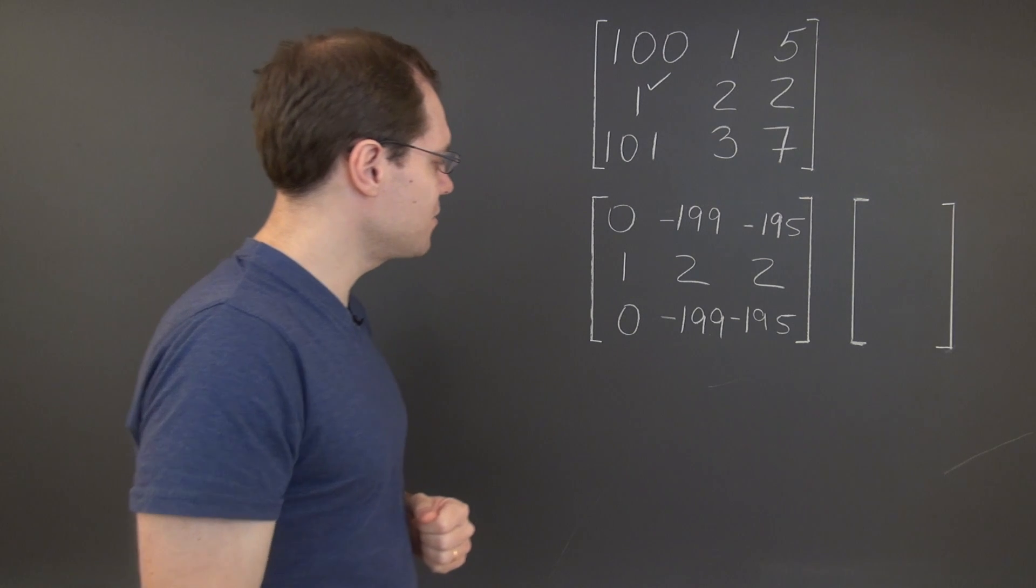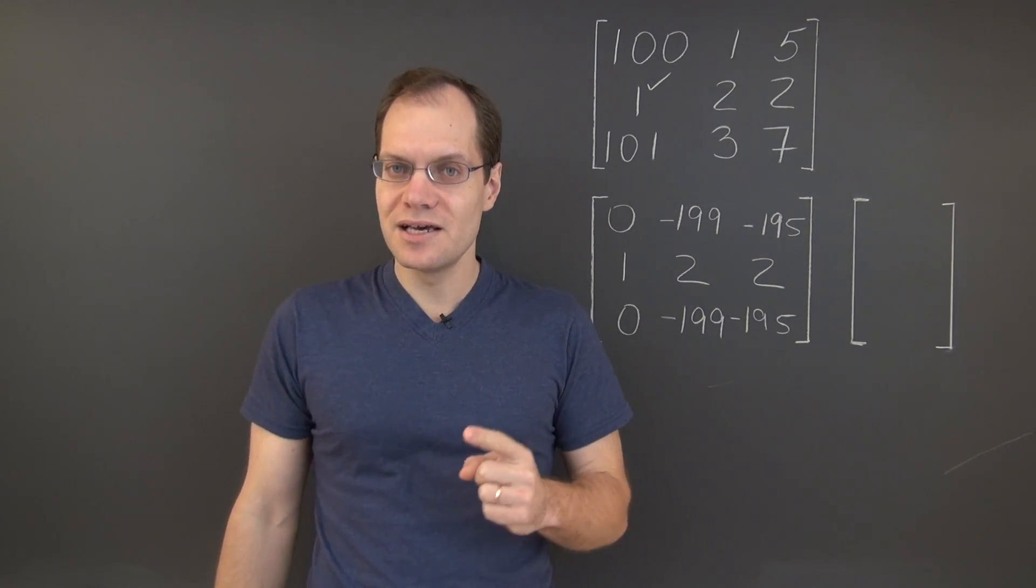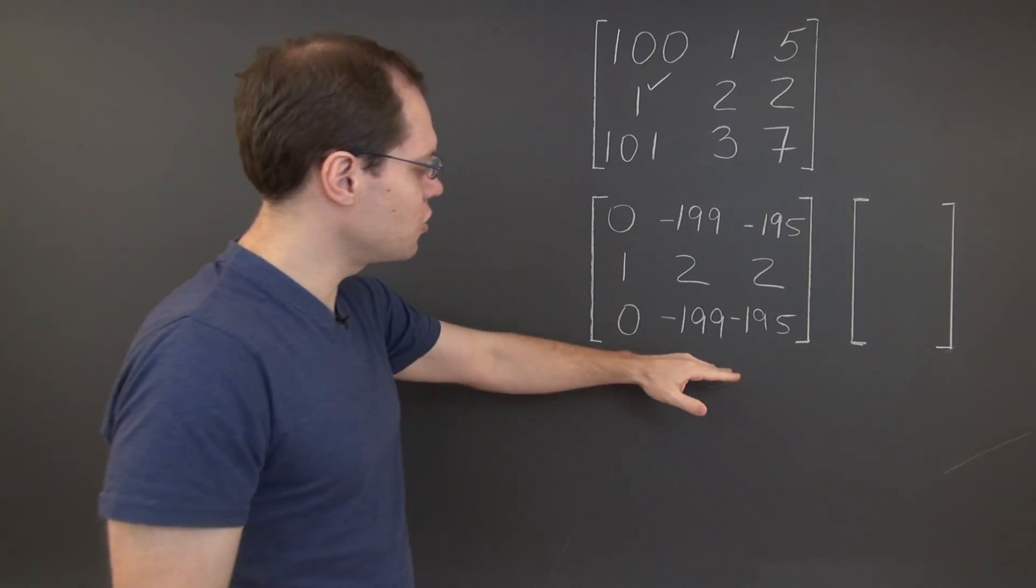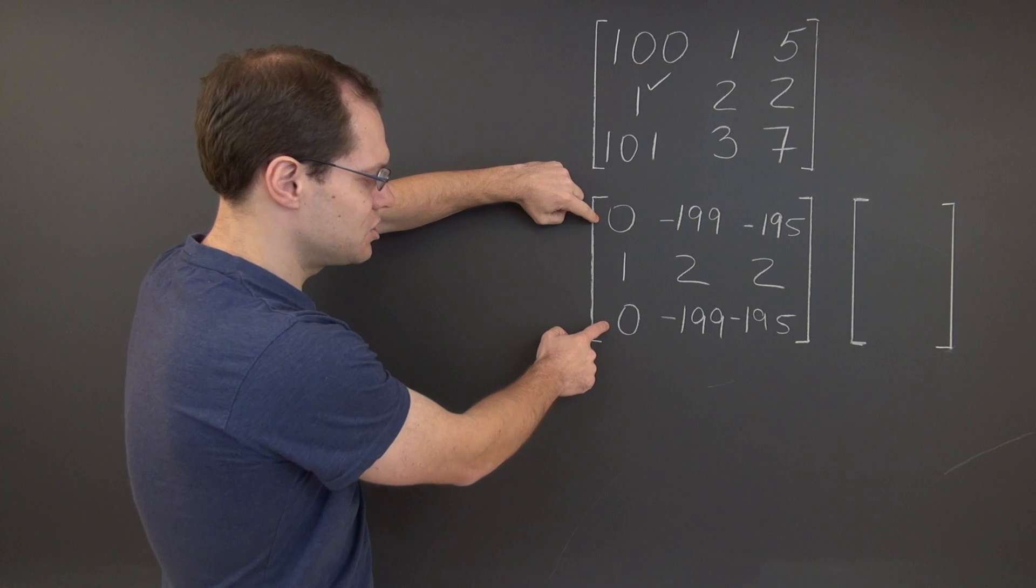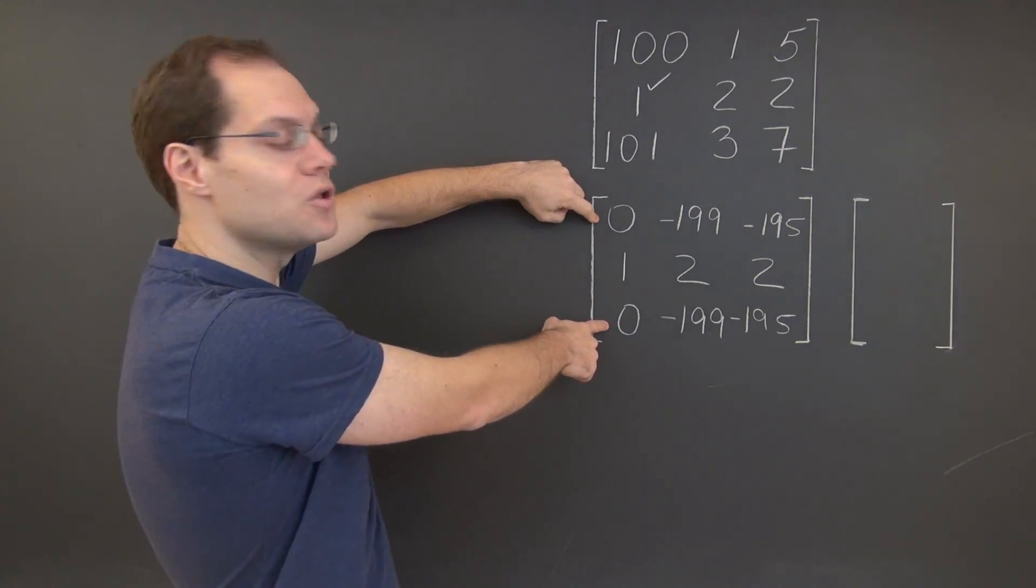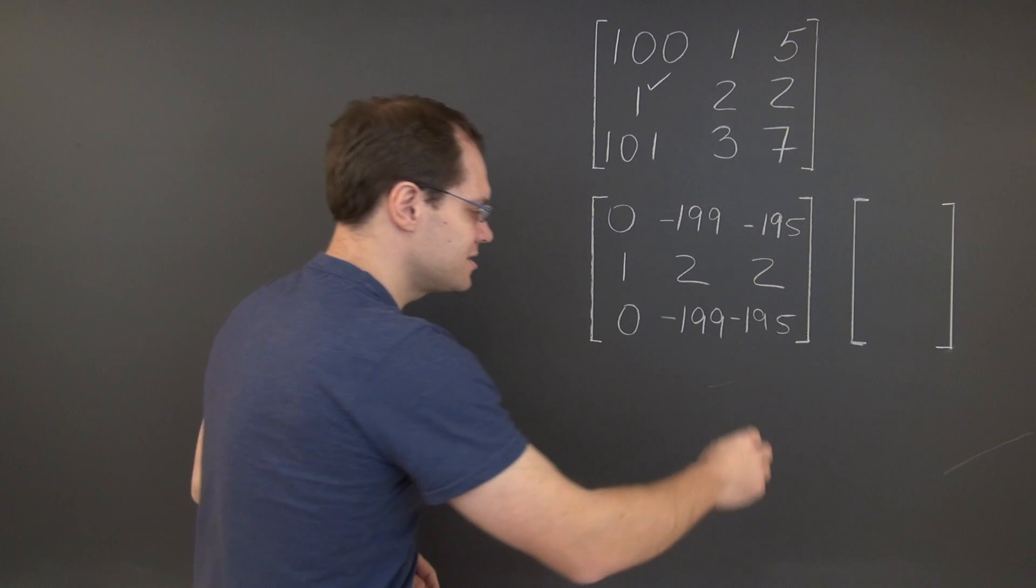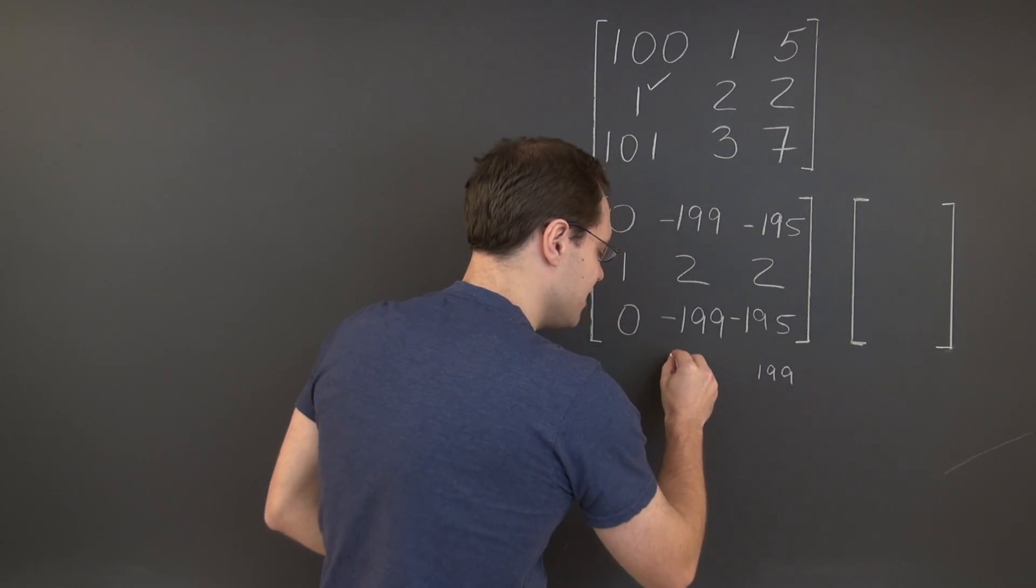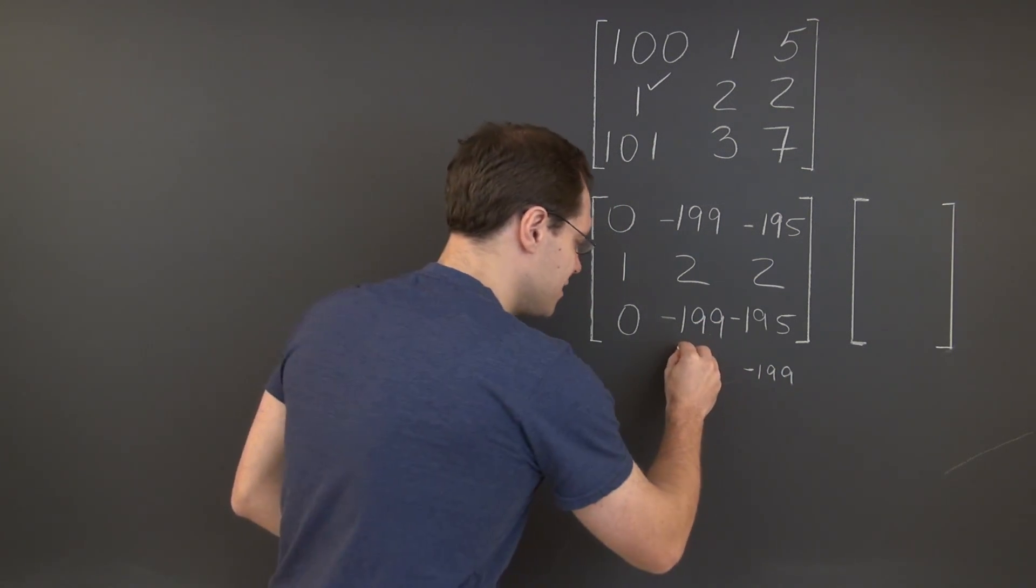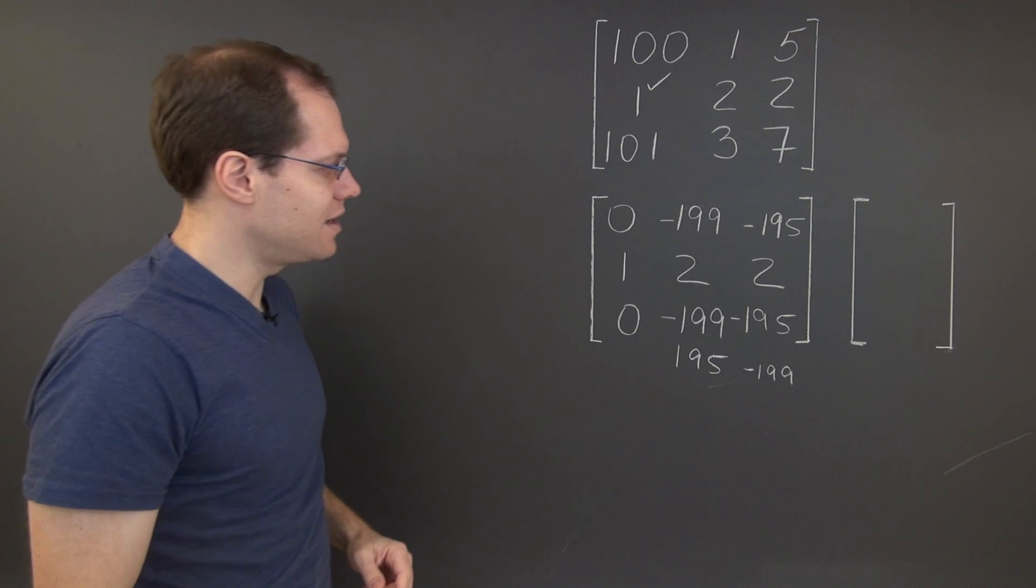But look, now we're done. We don't need to go any further than this, because the null space can be rather easily determined from this form, helped by these two zeros. This is all we need to conclude that we need to take 199 of this column. Let's take minus 199 of this column and 195 of this column.